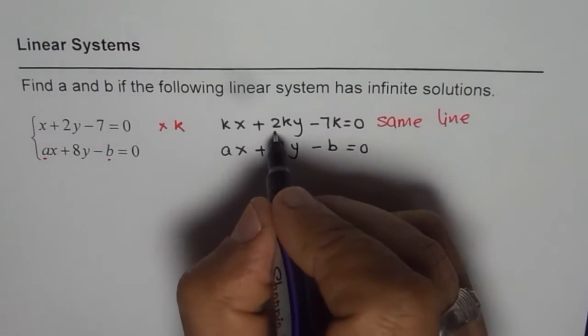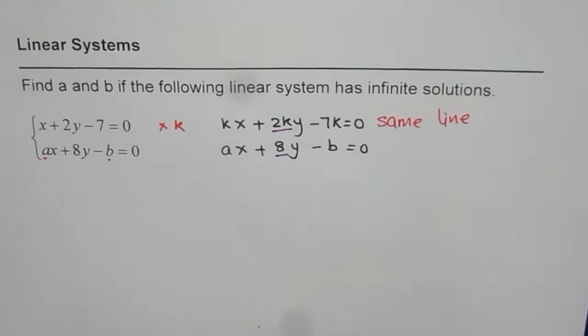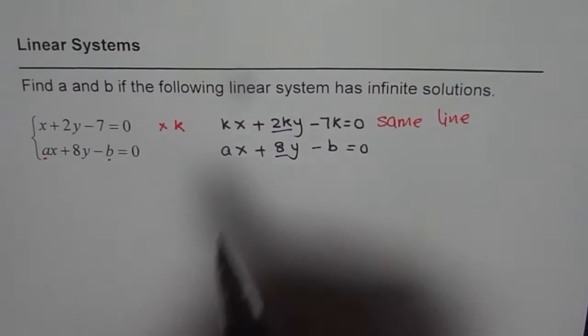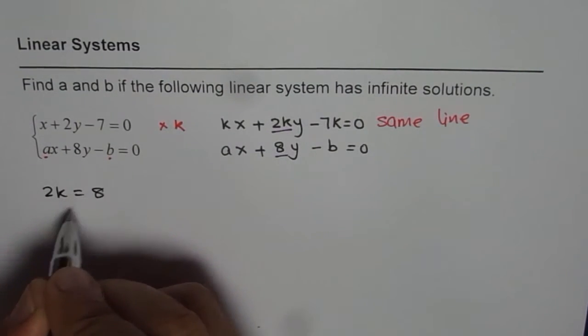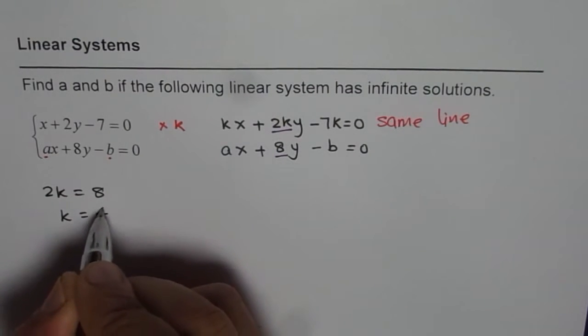From here, we can compare and find the value of k. Since the coefficient of y is 2k and 8, we can say 2k = 8, or k = 4.